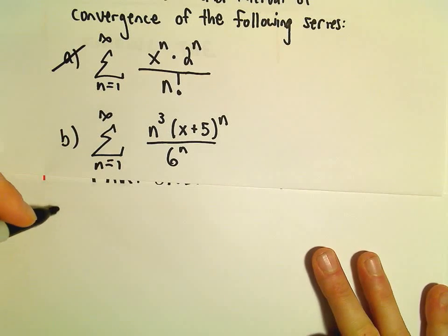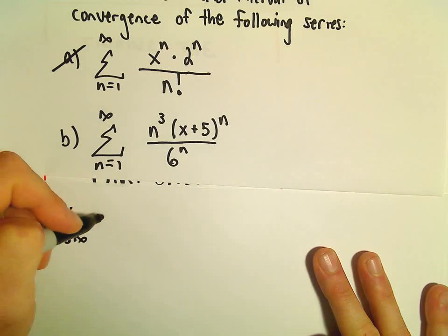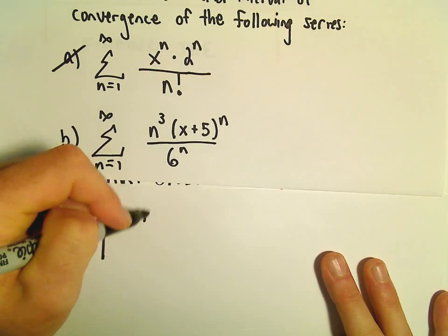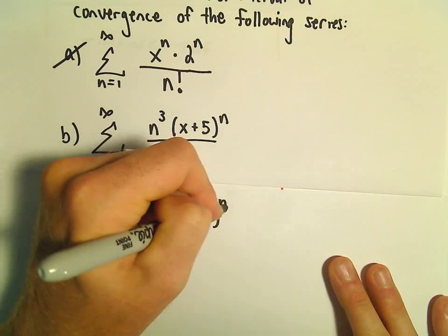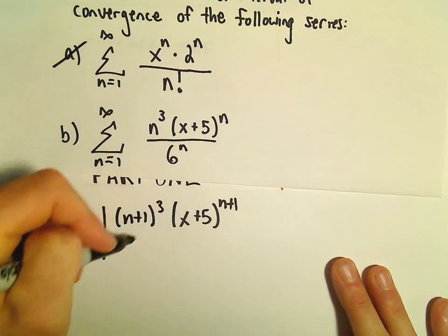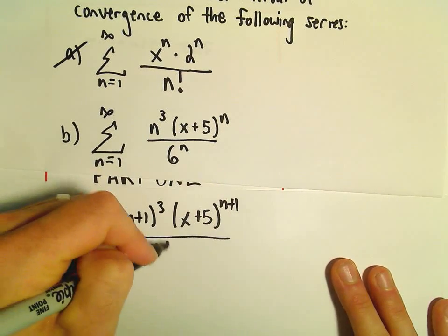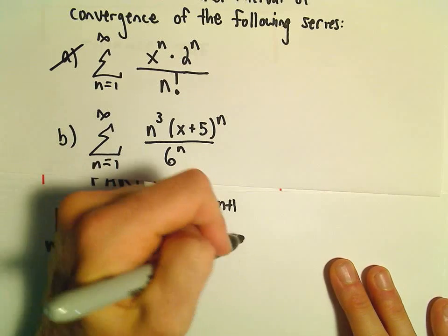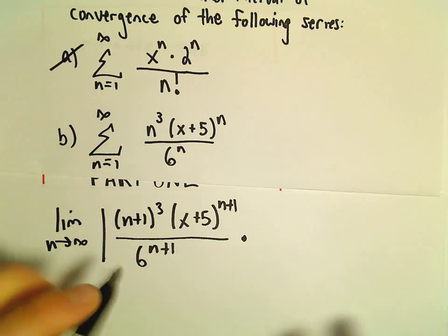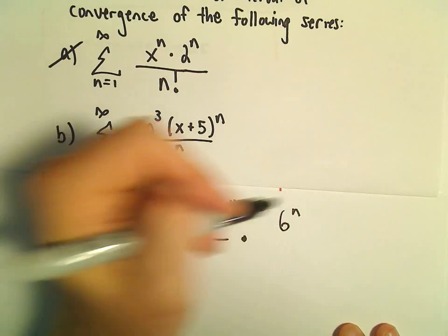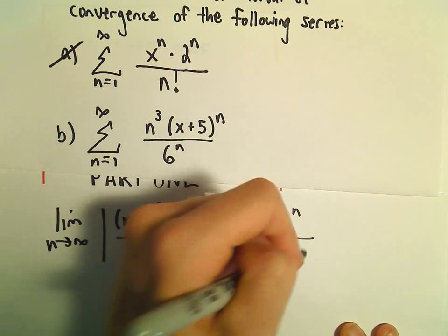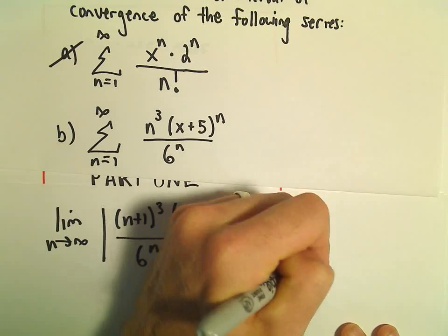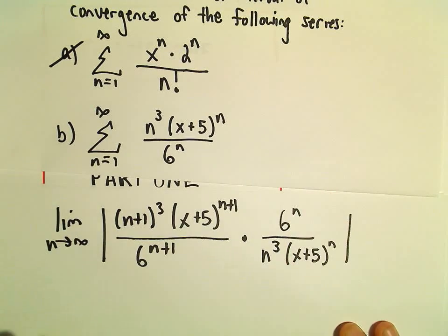So again, we're just going to use the ratio test — the limit as n goes to infinity. We would have n plus 1 to the third, x plus 5 raised to the n plus 1, over 6 raised to the n plus 1. Then we flip and multiply by the reciprocal: 6 to the n over n cubed times x plus 5 raised to the n power.